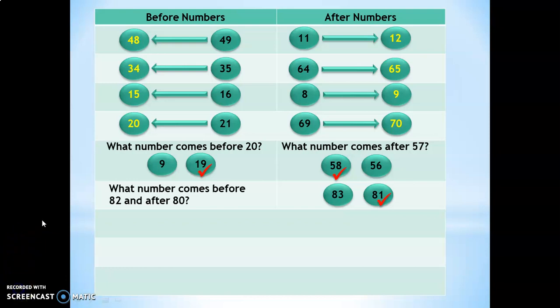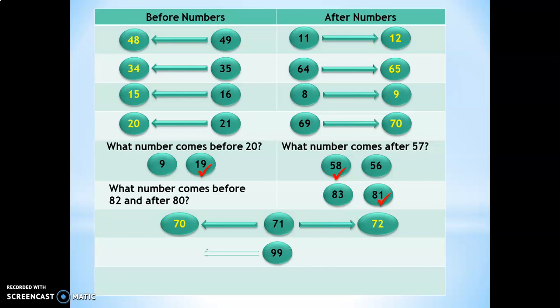Another way to test the after numbers and before numbers concepts: 'What is the number which comes before 71 and after 71?' The answer: 70 comes before 71 and 72 comes after 71. What is the number that comes before 99 and after 99? The number before 99 is 98 and the number after 99 is 100.